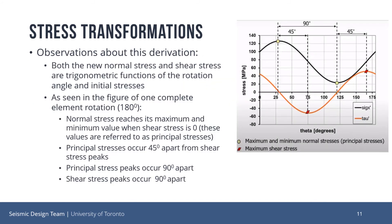From these derivations, we may draw some observations about the transformations of normal and shear stress. Both the normal and shear stress are trigonometric functions of the rotation angle and initial stresses. As seen in the figure for an example of a complete 180-degree element rotation, the following relationships occur: normal stress reaches its maximum and minimum value when shear stress is equal to zero. These maximum and minimum values are referred to as principal stresses for normal stress. Principal stress occurs 45 degrees apart from shear stress peaks. Shear stress peaks occur 90 degrees apart from other shear stress peaks, and principal stress peaks occur 90 degrees apart from each other as well.